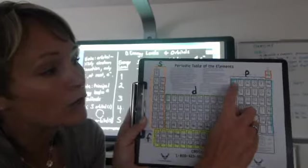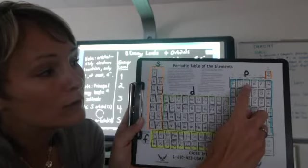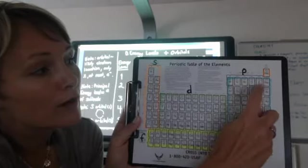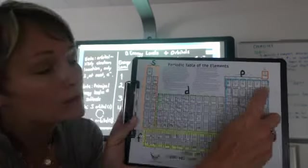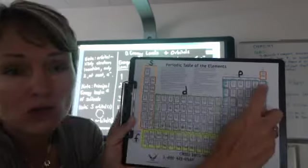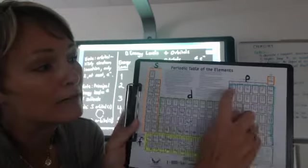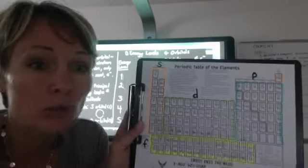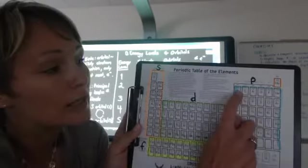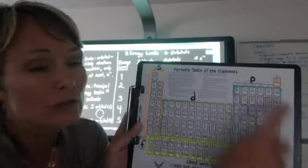And if we count across here, one, two, three, four, five, six groups or six total electrons in the p orbitals. I say orbitals because remember, there are three p orbitals. Each one can hold two electrons.